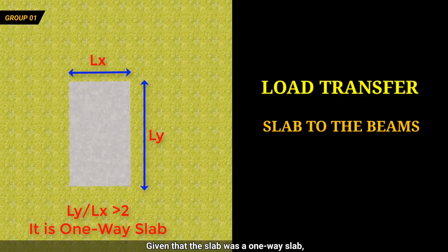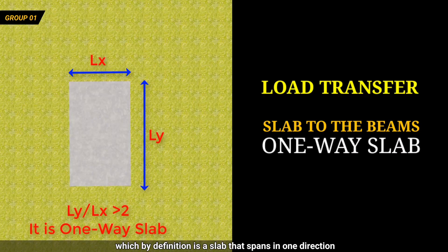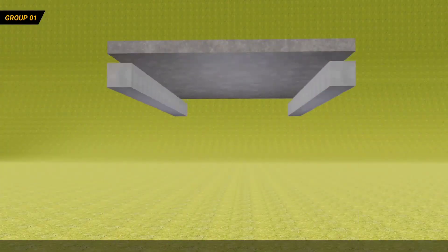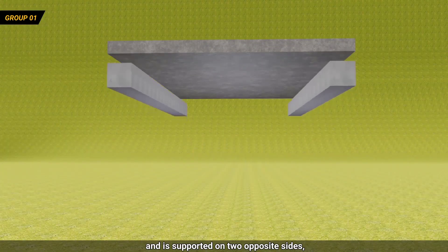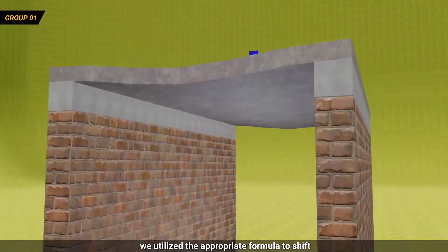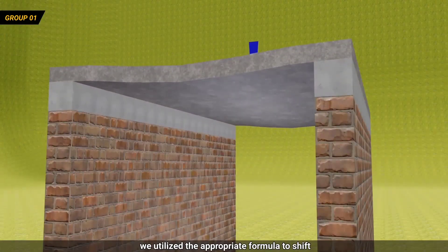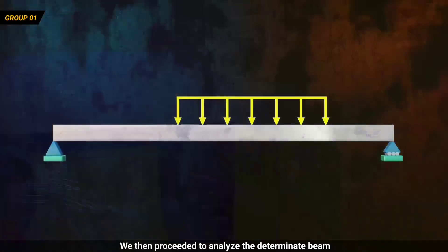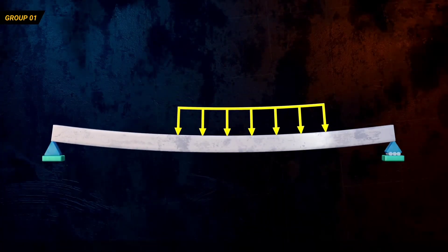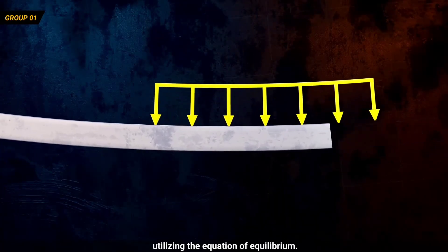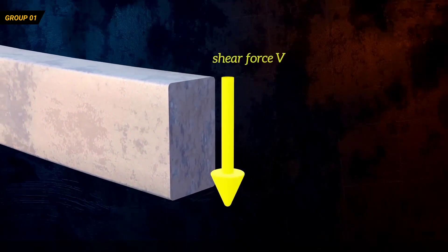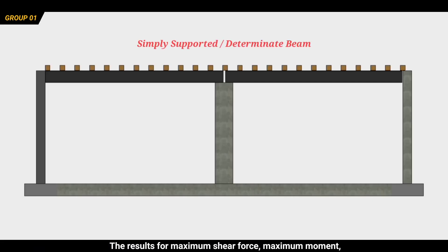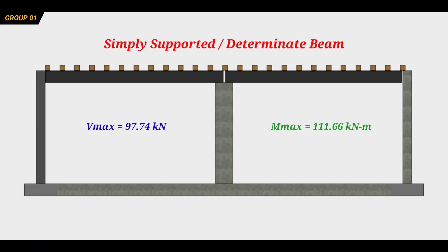Given that the slab was a one-way slab — which by definition is a slab that spans in one direction and is supported on two opposite sides — we utilized the appropriate formula to shift the load to the beam. We then proceeded to analyze the determinate beam utilizing the equations of equilibrium. The results for maximum shear force and maximum moment are illustrated accordingly.